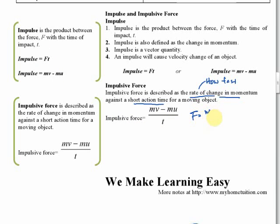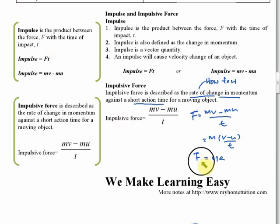Impulsive force F equals mv minus mu over t. If we factorize the m, we get m times (v minus u) over t. Since (v minus u) over t equals acceleration, we have F equals ma — the same formula derived from Newton's second law. So impulsive force is the same as force.